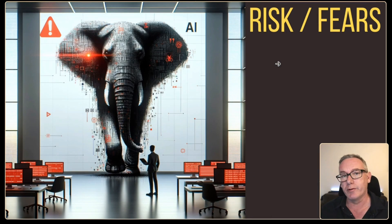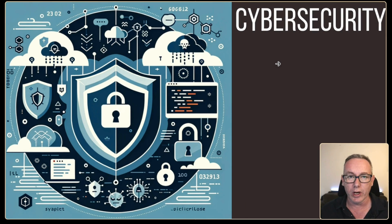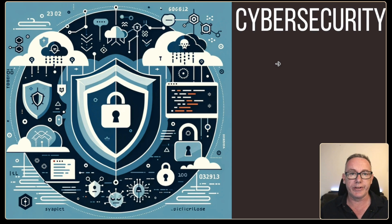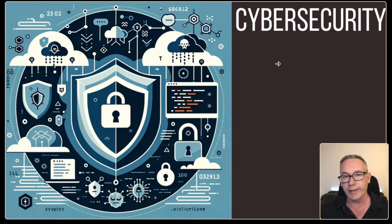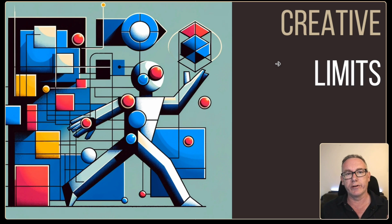Now let's address the risks of working with autonomous AI programmers. The biggest is cyber security: there's a real issue with GitHub repos being cloned with malicious code added. If the bot downloads something malicious and runs it locally or introduces it into your program, that's a serious threat. The next issue is the creative limitations of AI programmers — they don't handle more esoteric decisions well, like which language to use, which architecture, which patterns, or which edge cases to consider.